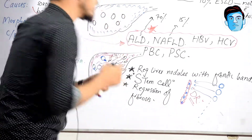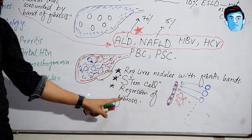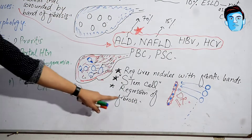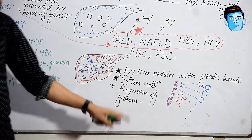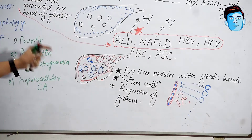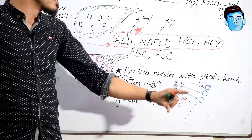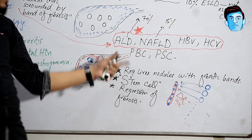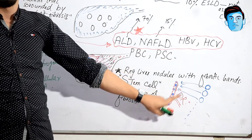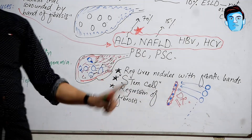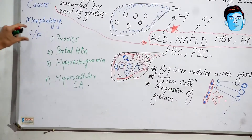Another thing is regression of fibrosis. Whenever in any area there is repeated healing, scarring, and fibrosis, there comes a stage when they get regressed. Whenever you remove the causative agent, ultimately this fibrosis will be regressed. So in the morphology of the cirrhotic liver: first, regenerating liver nodules with fibrotic bands; second, stem cell activation leading to ductal reaction; and third, regression of fibrosis when the causative agent is removed.